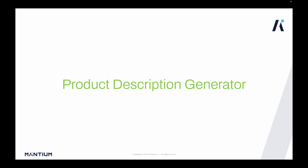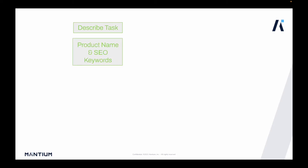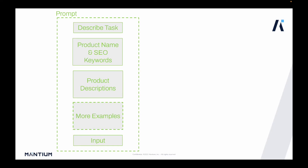Let's talk about the structure of the prompt which you send to the language model to generate the product description. The first thing you have is a description of the task, then the product name and search engine optimized keywords, followed by the product descriptions. You have multiple examples which serve as patterns in a few-shot learning approach — product name followed by product description — and you can have up to three, four, or five examples.